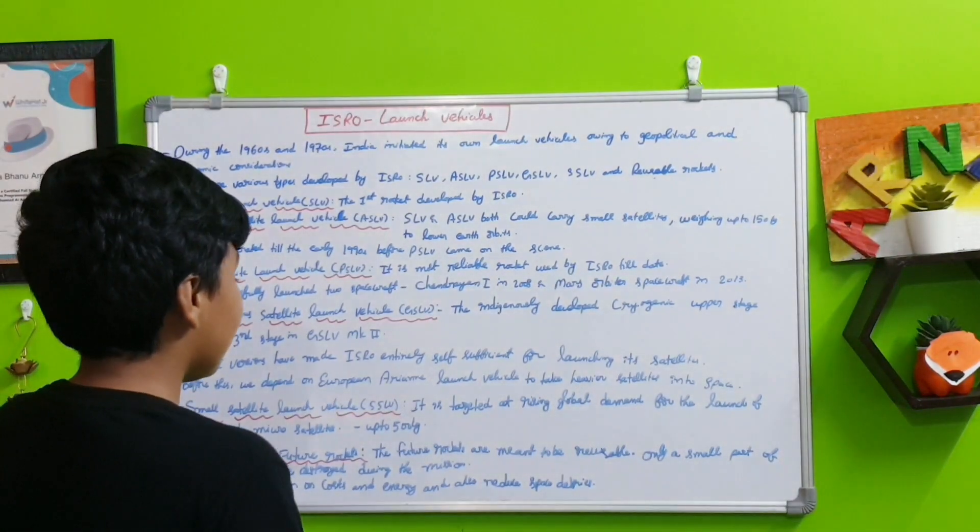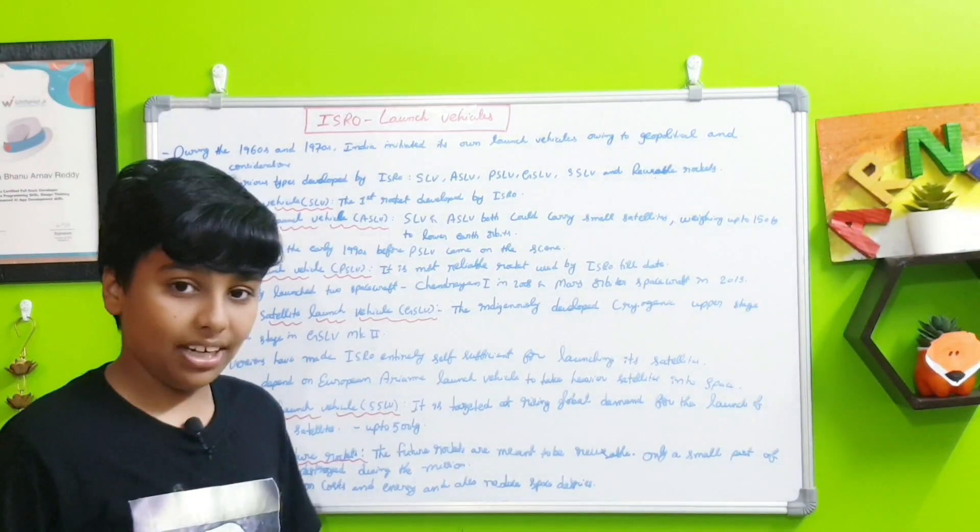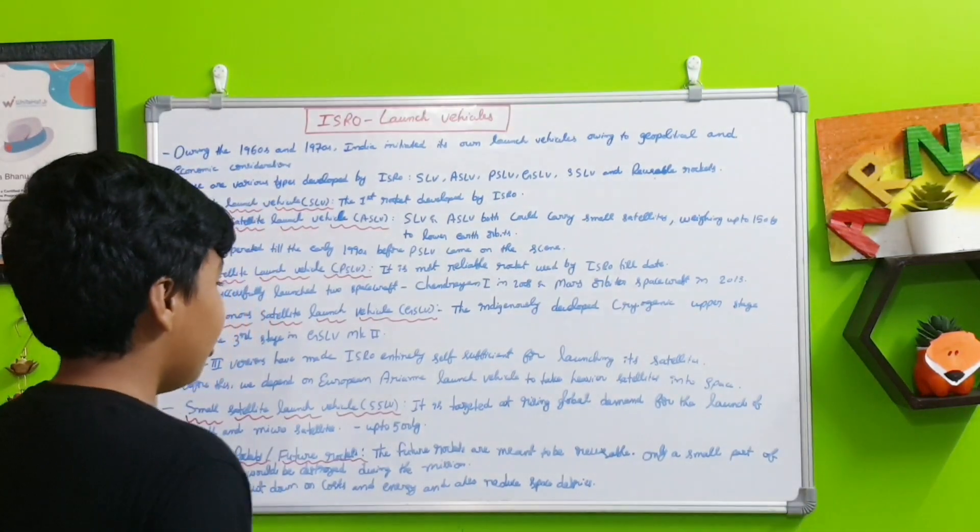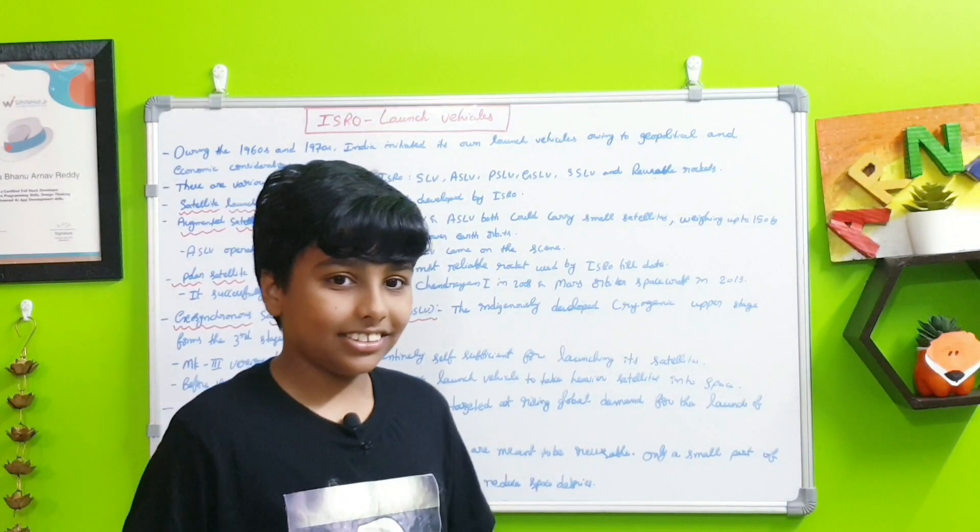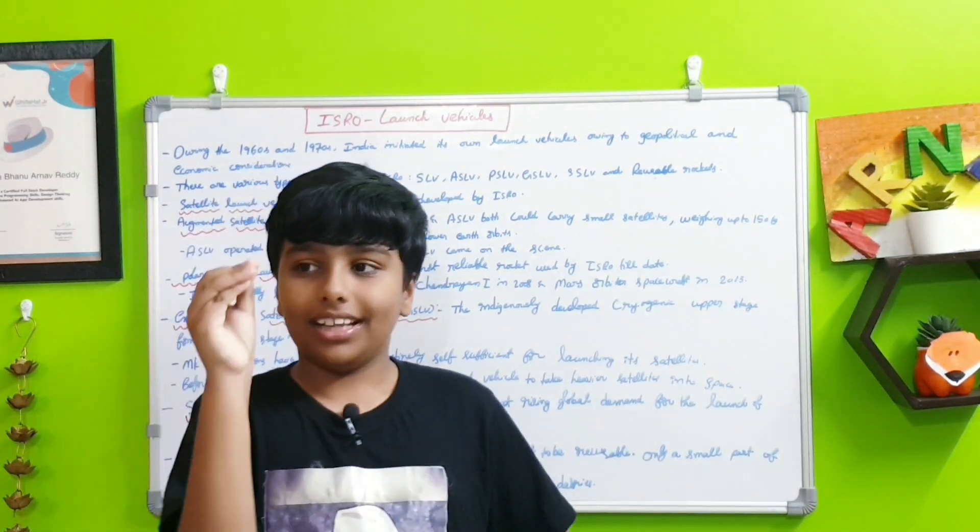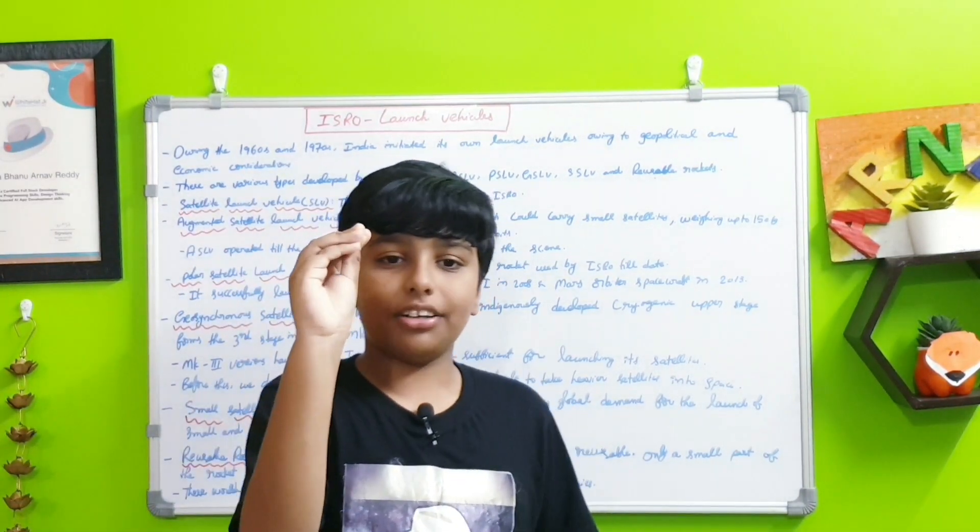Finally, the rockets are complete, and now reusable rockets or future rockets. The future rockets are meant to be reusable. Only a small part of the rocket would be destroyed during the mission. For example, there's a rocket going up to space—think of this as a rocket.